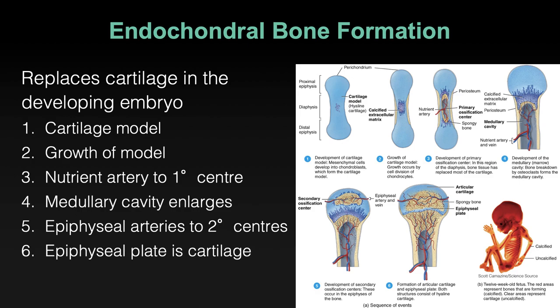Your bones aren't growing as much anymore, and eventually they'll fuse and you will be at a fixed height — the tallest height you will ever be — and you'll gradually shrink over the decades until you're 70 or 80.